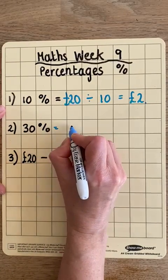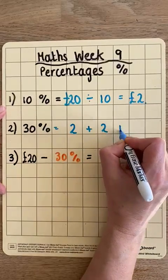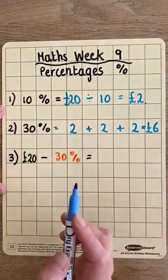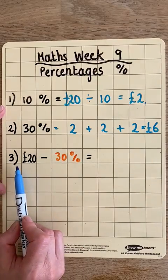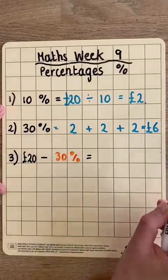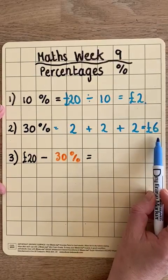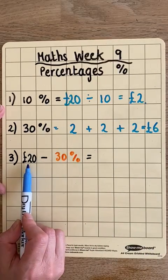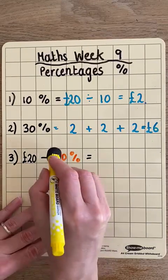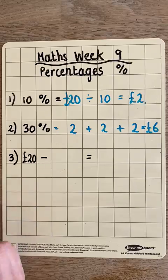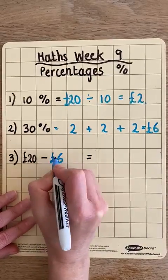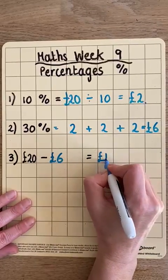To find 30%, it's three lots of 10%, so 10% + 10% + 10%, which is 2 pounds + 2 pounds + 2 pounds, giving us 6 pounds. Now that's not the final answer — the top costs 20 pounds and I get 6 pounds off, so the final step is 20 pounds take away 6 pounds, which gives me 14 pounds.